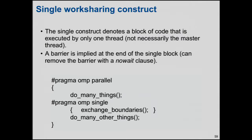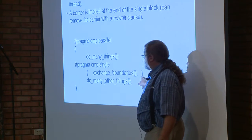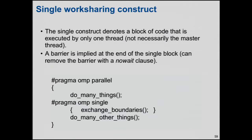The single work-sharing construct is grossly underappreciated but actually pretty cool. It denotes a block of code executed by only one thread — not necessarily the master thread. You're not saying which thread; the first thread that gets to this single will execute the code. Everyone else waits at the implied barrier. So one thread — whichever one — will do the operation, and the other threads wait right here at the implied barrier before going on. That's the single construct.